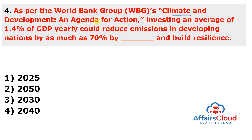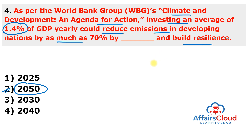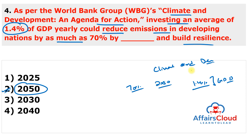Next question: As per the World Bank Group's Climate and Development — An Agenda for Action, investing an average of 1.4% of GDP yearly could reduce emissions in developing nations by as much as 70% by the year 2050 and build resilience. The analysis collects and harmonizes findings from country climate and development reports of the World Bank Group, covering more than 20 countries accountable for 34% of global greenhouse gas emissions.